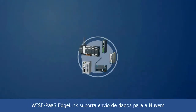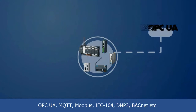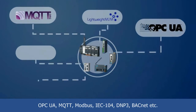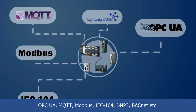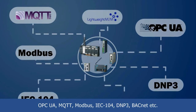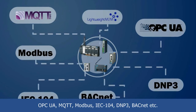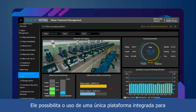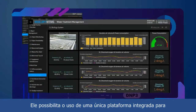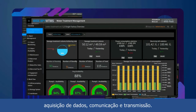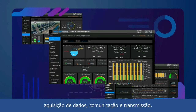WisePaws EdgeLink supports uplinking with OPC UA, MQTT, Modbus, IEC104, DNP3, BACnet, and more. It allows the possibility to use a single integrated platform for data acquisition, communication, and transmission.